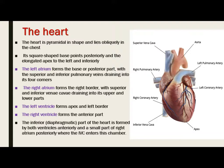The heart is pyramidal in shape and lies obliquely in the chest. Its square-shaped base points posteriorly and the elongated apex to the left and inferiorly. The left atrium forms the base or posterior part. The right atrium forms the right border. The left ventricle forms the apex and left border. The right ventricle forms the anterior part. The diaphragmatic part of the heart is formed by both ventricles anteriorly and a small part of the right atrium posteriorly, where the inferior vena cava enters the chamber.